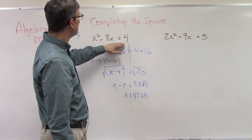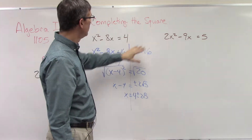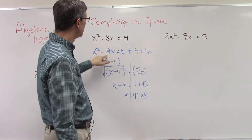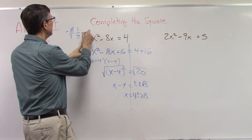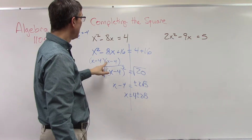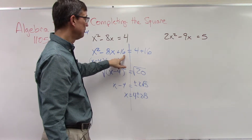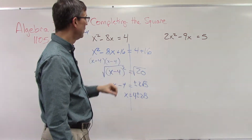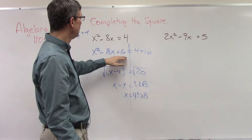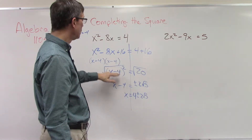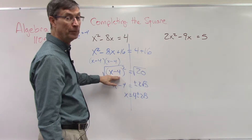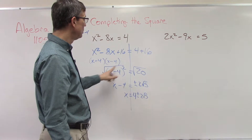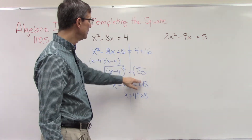Let's quickly recap those steps. We put a little gap in the equation, move the constant to the other side, take half the middle term — half of negative 8 is negative 4 — and square that to get 16. Then add that to both sides to keep it balanced. We factor the left side as a quantity squared, where what goes in the parentheses is half the middle term. Then take the square root of both sides, bring the constant over, and write plus or minus the square root.